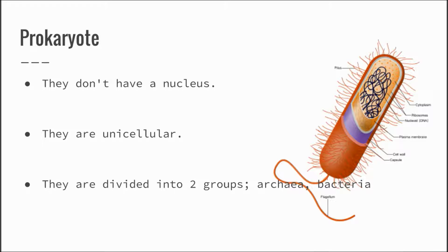Prokaryotes do not have a nucleus. They are unicellular and are divided into two main groups: archaea and bacteria.